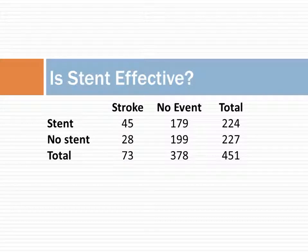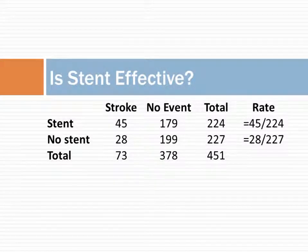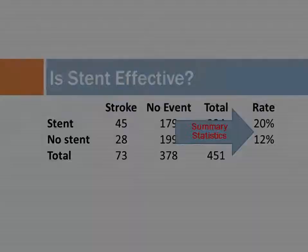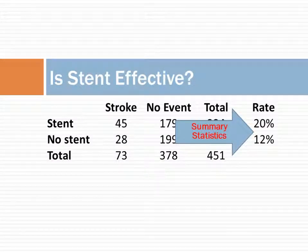Here we see that among the 224 patients who received stent, 45 had a stroke. Among the 227 who did not receive stent, 28 had a stroke. The rate of stroke in the treatment group is 0.2 or 20%. The rate of stroke in the control group is 0.12 or 12%. These rates are referred to as summary statistics.